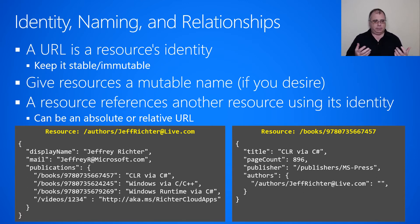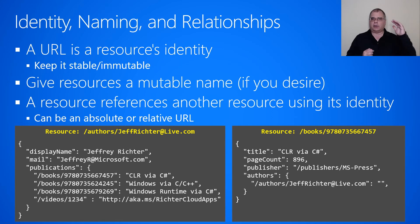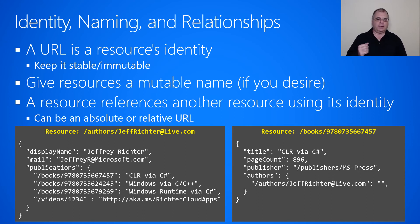I've also published videos, so in the videos collection I have an ID for the video, 1234, and then the path to where that video can be found. That's my resource. We talked about the identity, we've talked about naming, and you can see this resource has relationships to other resources, like the various books. On the right-hand side at the bottom of the slide, I show the books collection, where I've selected one of the books — the ISBN number ending in 457.